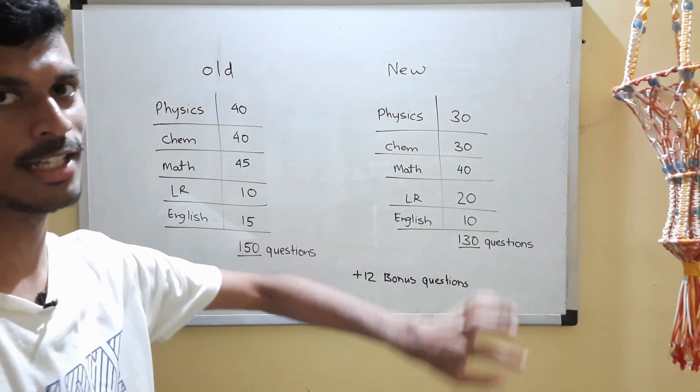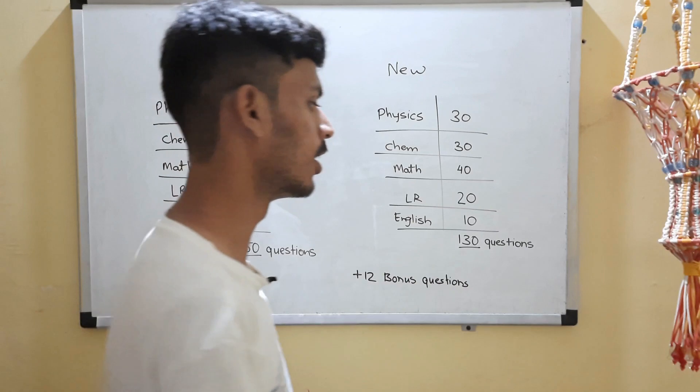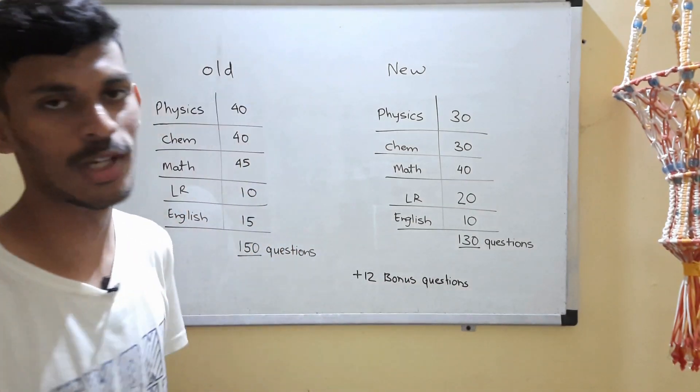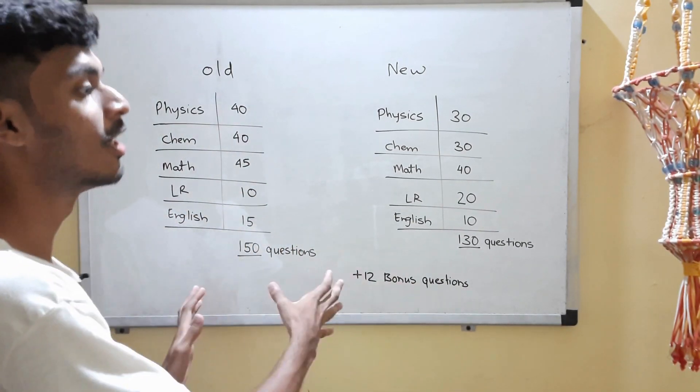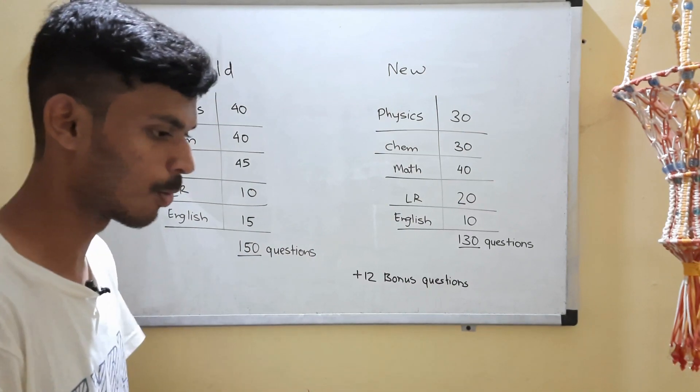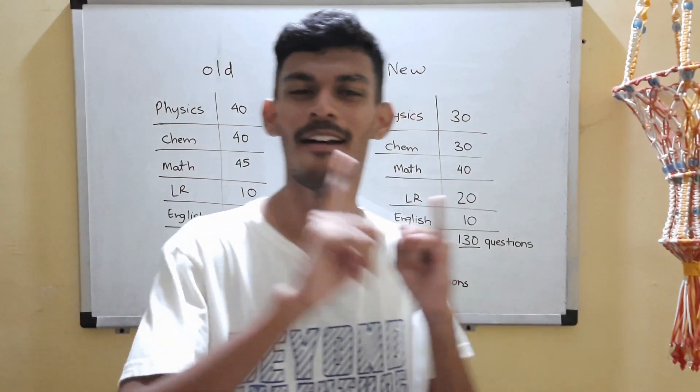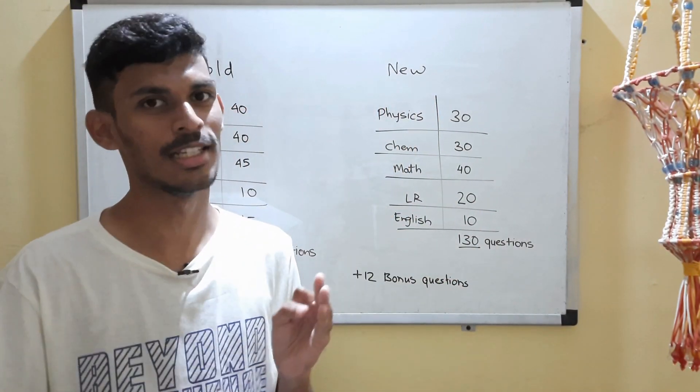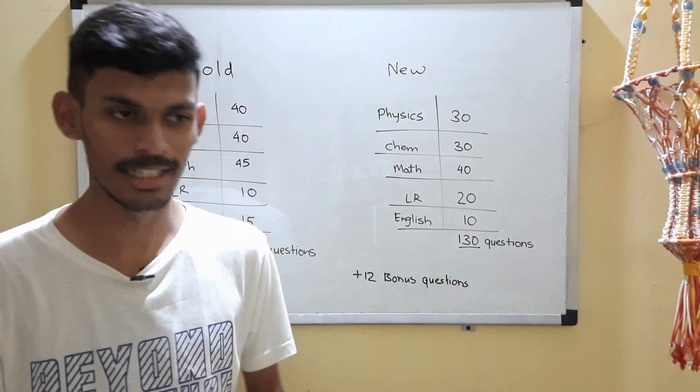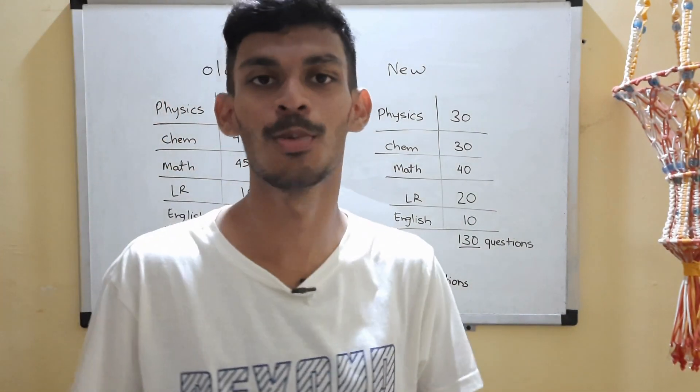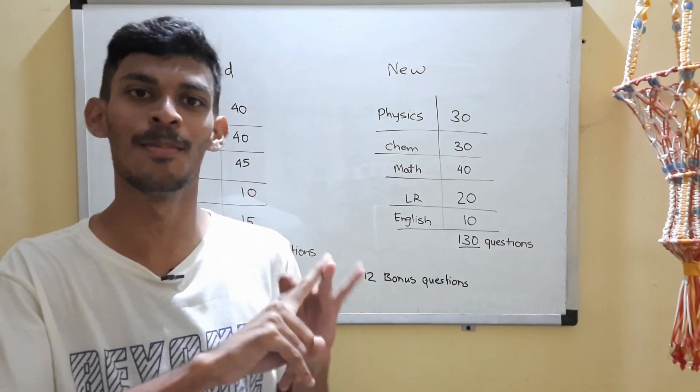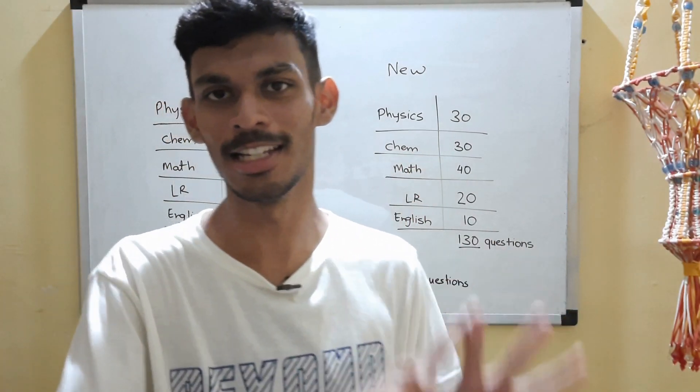The 12 bonus questions remain the same. Earlier the 12 bonus questions only included the sections Physics, Chemistry, Maths—four questions each—but now the pattern has changed and the 12 bonus questions include the sections Physics, Chemistry, Maths and Logical Reasoning.